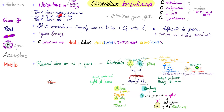Clostridium botulinum is ubiquitous in soil. Type A strain is found in neutral or alkaline soils. Type B strain is found in organic soil. Type C is found in wet soil. Clostridium botulinum is anaerobic, spore-forming, and produces the famous heat-labile neurotoxin.